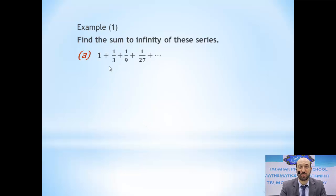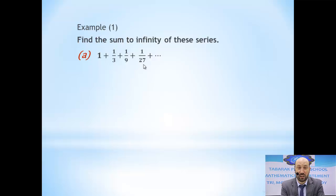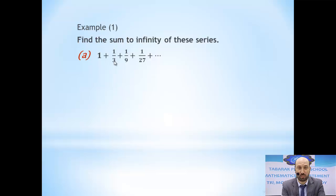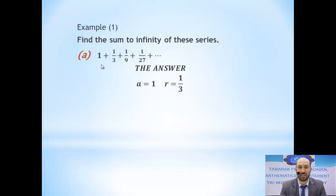Here we have 1 + 1/3 + 1/9 + 1/27. How could we know if it's a geometric series or an arithmetic series? We have to find the common difference or the common ratio between the terms. If we subtract here, 1/3 minus 1 — not the same difference. If we subtract 1/9 minus 1/3 — again not the same. So we don't have an arithmetic series. Now how could we find the common ratio?